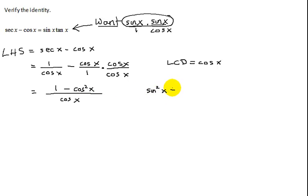Sine squared x plus cosine squared x equals 1. The most important Pythagorean identity. So if I subtract cosine squared from both sides I get sine squared x equals 1 minus cosine squared x.